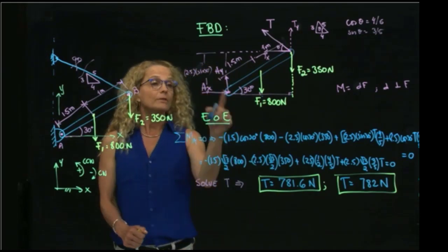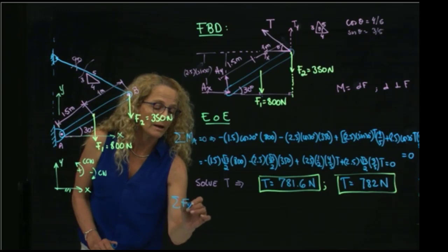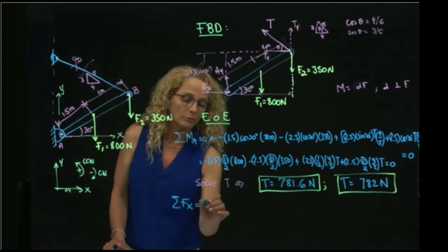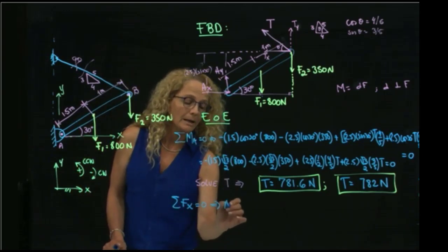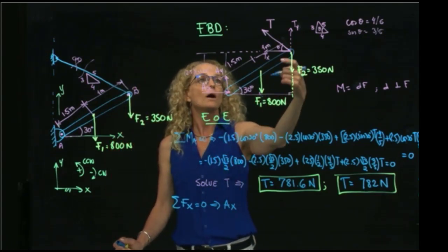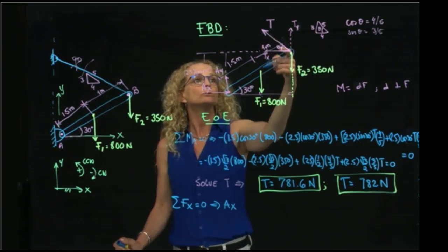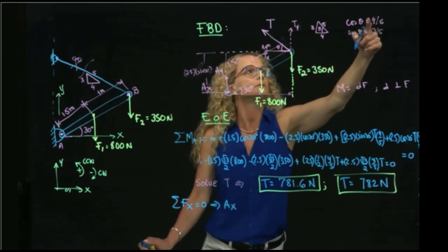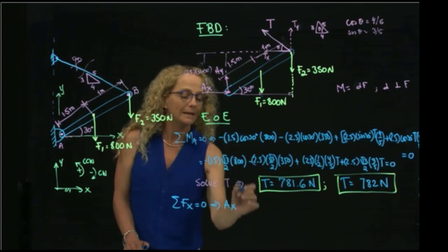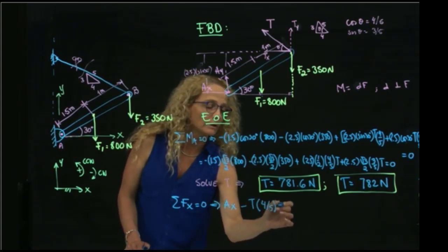Now that we have the tension, now we can add forces in x, and then my x will be Ax. These two forces act in y, so I only have Tx. And Tx is the tension cosine of this angle, and this is 4/5. So it will be negative tension 4 over 5 equals to 0.